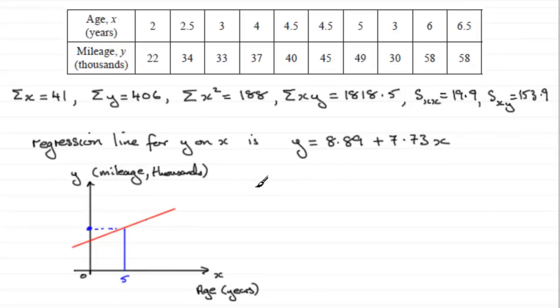So I'm going to say when x equals 5, then we're going to have y equals, now instead of 8.89, I'm going to take that earlier value, which was 8.89195, okay,